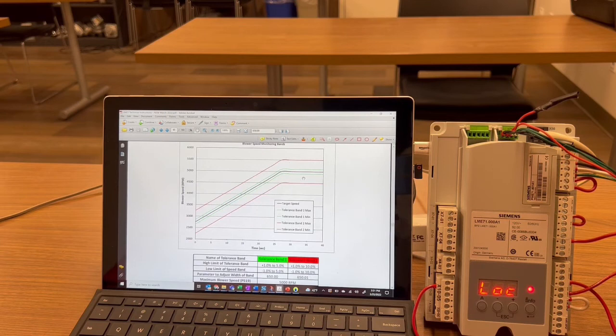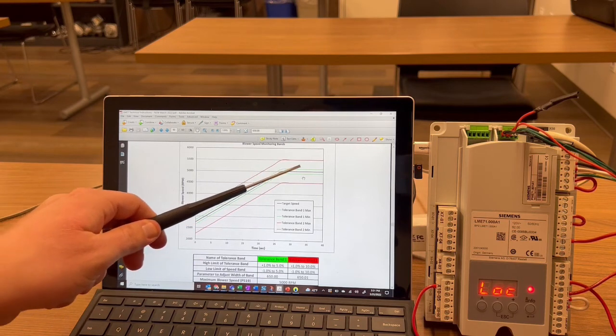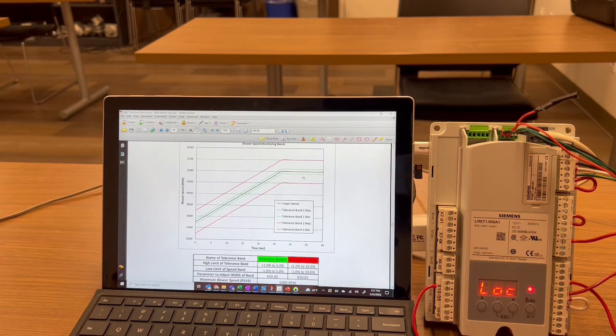To understand a speed fault, let's look at these tolerance bands. In the center, we see the target speed. And in green, we see tolerance band number one. And in red, we see tolerance band two. Tolerance band one is the green one.